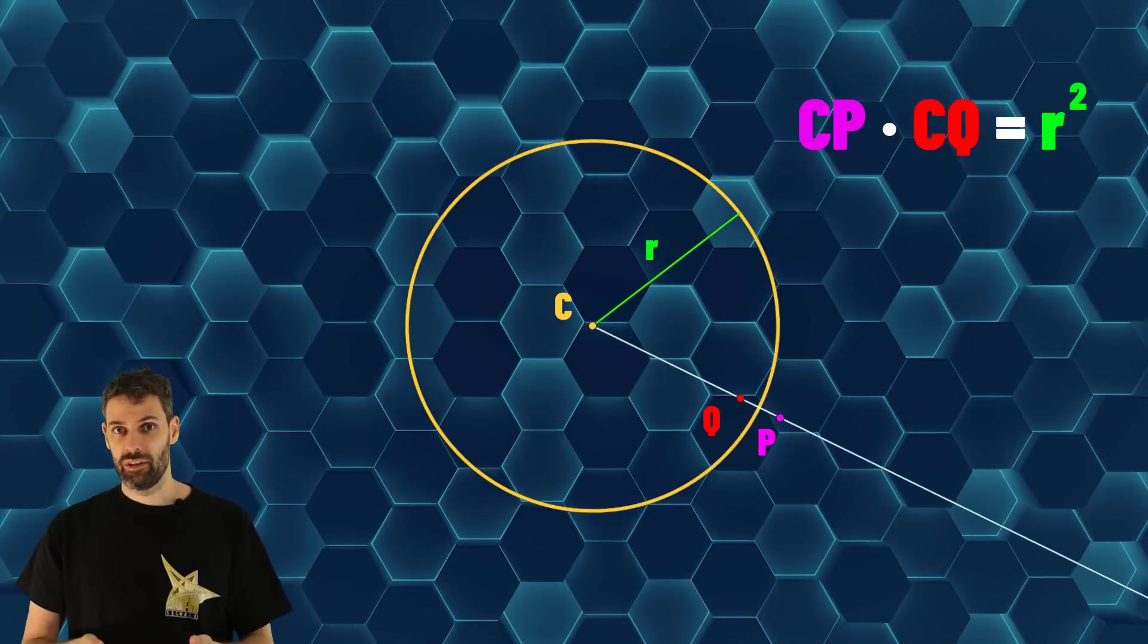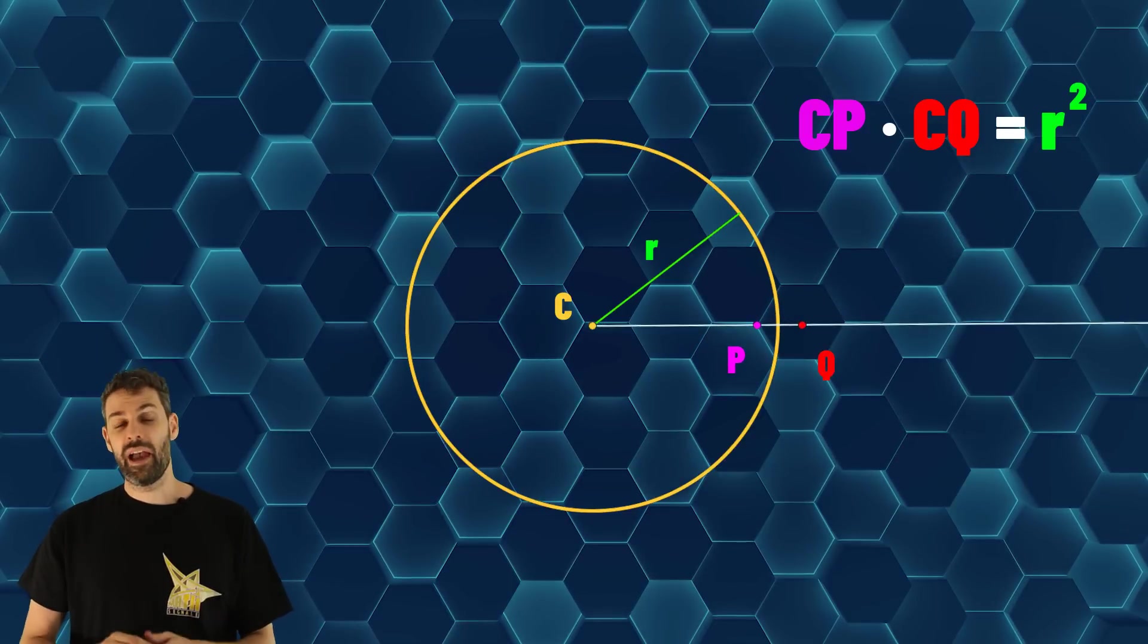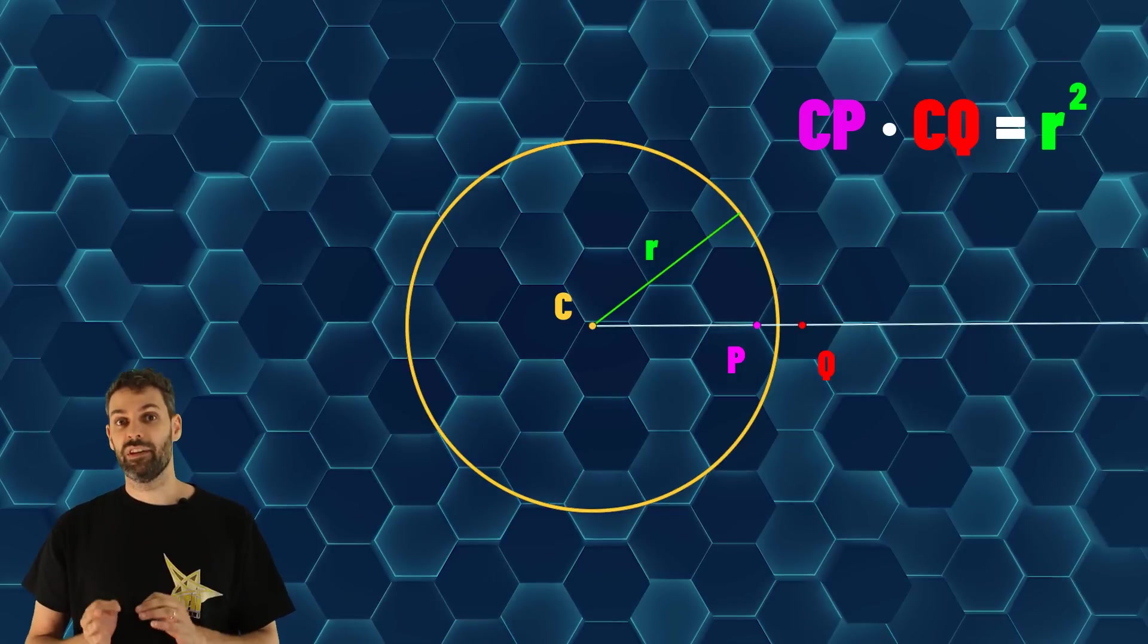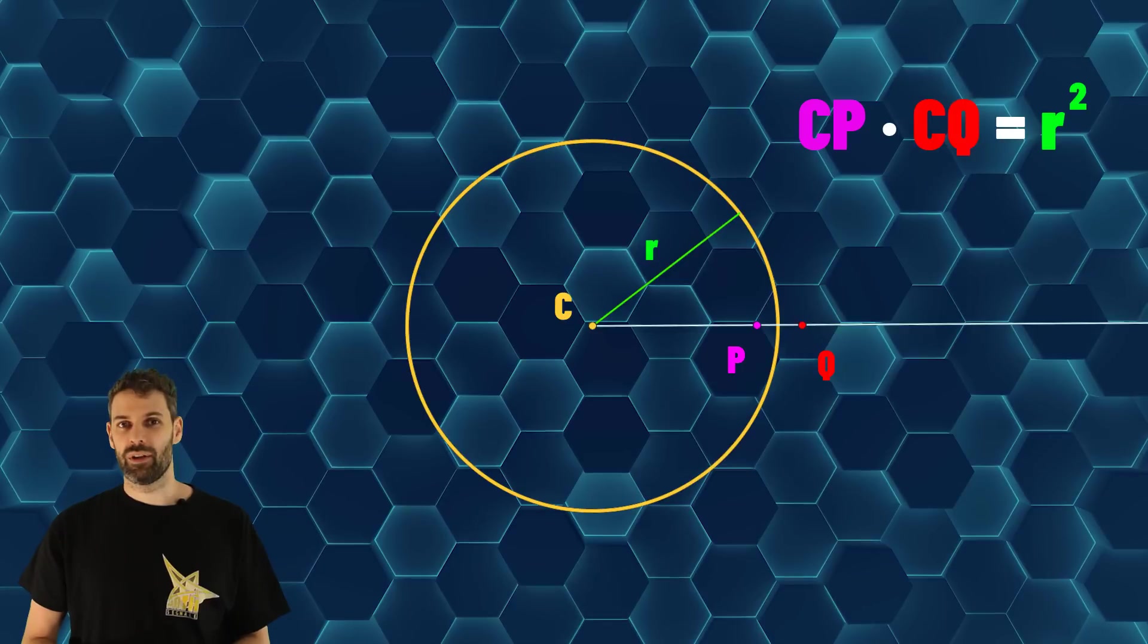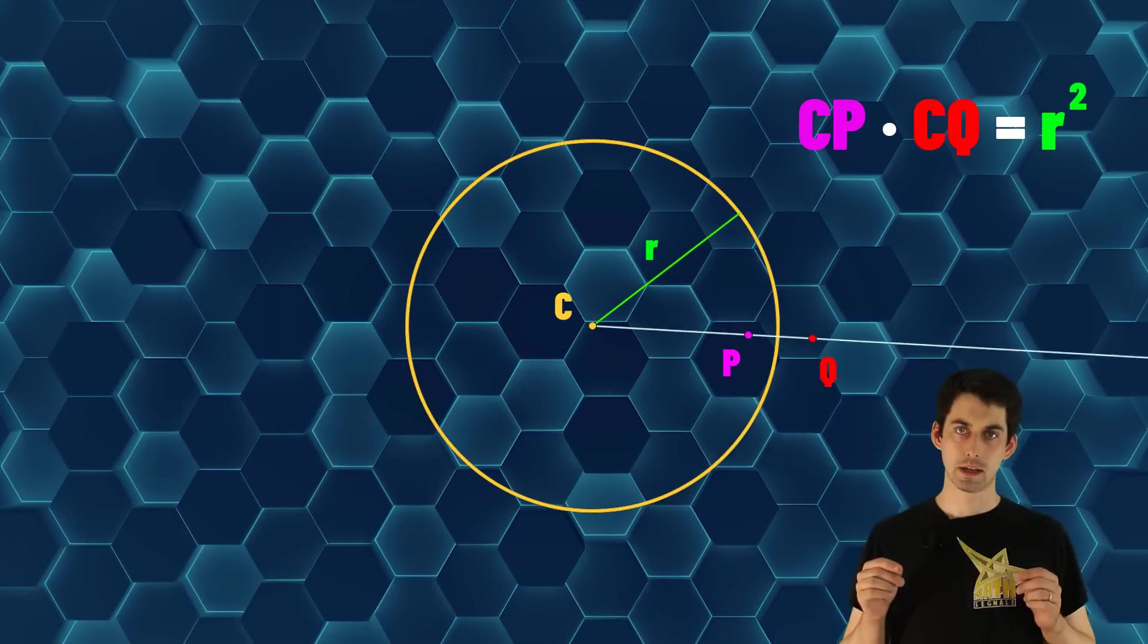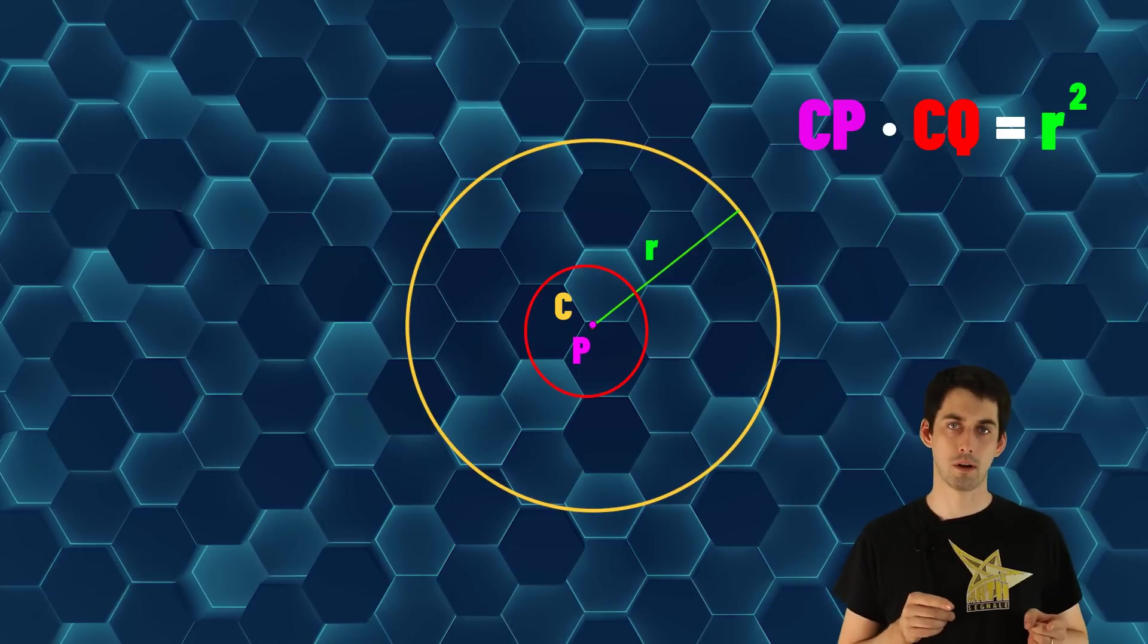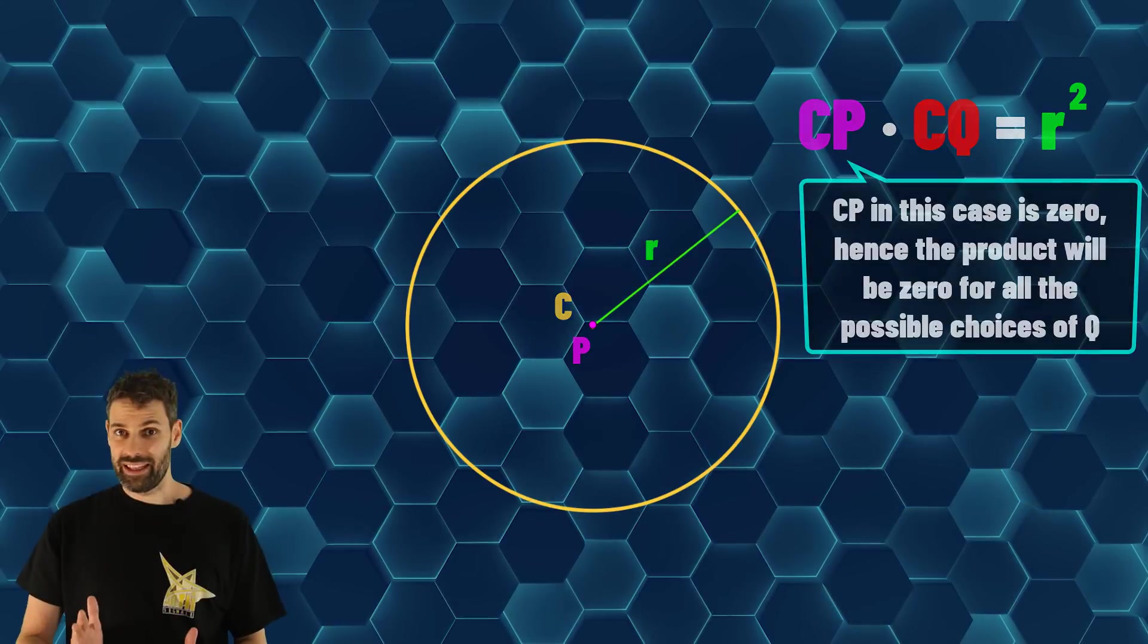Points inside the circle will go outside and vice versa. Every point in the plane can be transformed with this circular inversion, except one. Can you figure out which one? It seems that the center C cannot be transformed, right? Because this product is always zero. Well done!